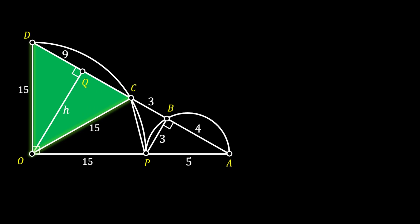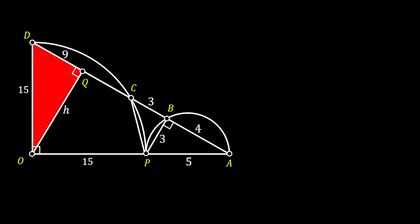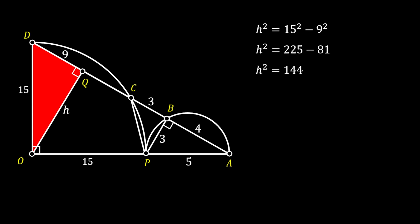Now let's go back to our red right triangle. We find the value of height H using the Pythagorean theorem: H² equals 15² minus 9². Simplifying, H² equals 144, and after taking the square root, the height of our red triangle is equal to 12.